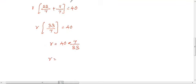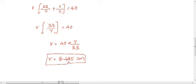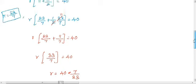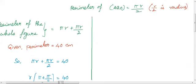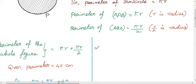So R equals 40 into 7 by 33. If we simplify this, we will get the radius value as 8.485 cm. This is the value of R.